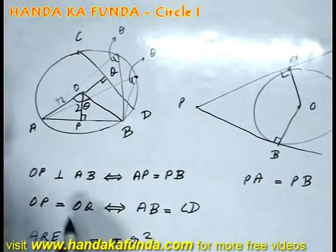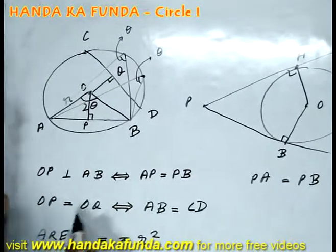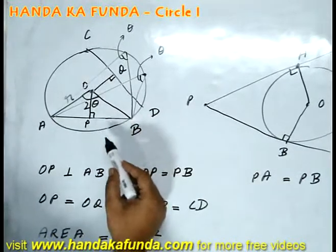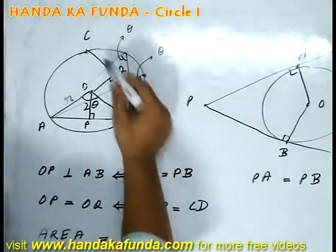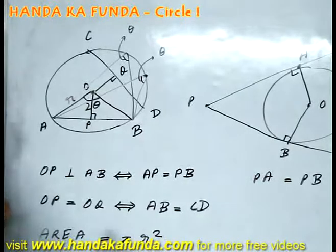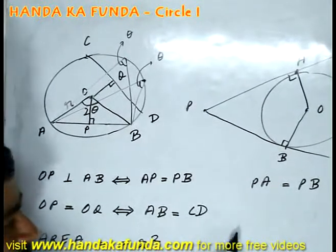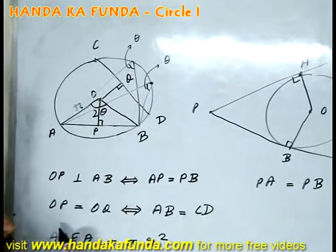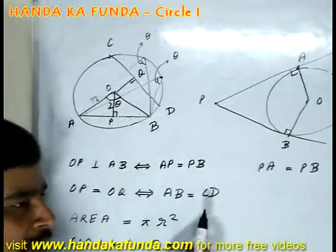If I am given that the distance of two chords is same from the center, that is OP is the distance to the chord AB and OQ is the distance to the chord CD, if I am given that they are equal then the chords will be equal in length. If I am given that the chords are equal in length then the distances will be equal. It is true both ways.